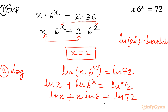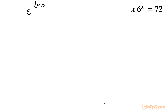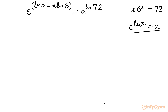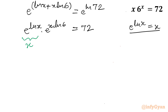Now exponentiate both sides — raising e to the power of each side. The left-hand side becomes e^(ln x) · e^(x·ln6), and the right-hand side becomes e^(ln72) = 72. Since e^(ln x) = x, and e^(ln6) = 6, the left side simplifies to x · e^(x·ln6), giving us x·e^(x·ln6) = 72.